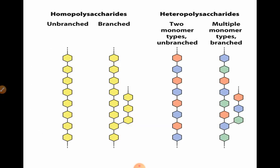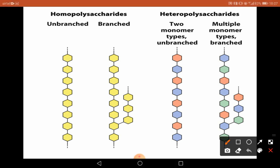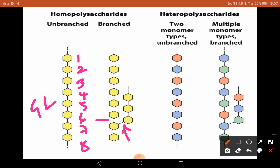This is a cartoon of homopolysaccharides where you can see similar units — eight monomers of the same size and shape — attached by glycosidic linkage. They can be unbranched or they can be branched. Here you can see another linkage: one linkage is connecting them vertically and another linkage is connecting them horizontally. Two chains, two polymers are connected in two different ways — hence we call this branched homopolysaccharides.